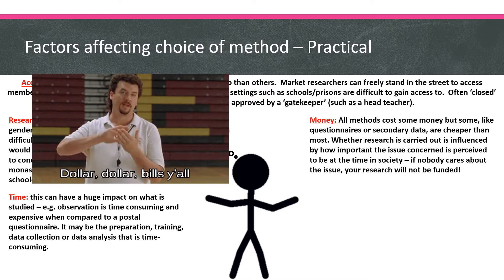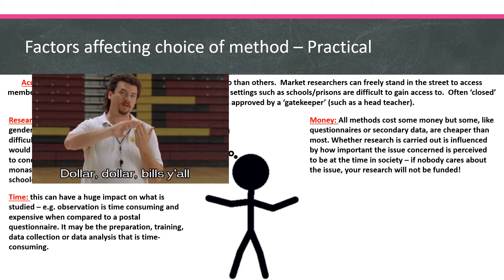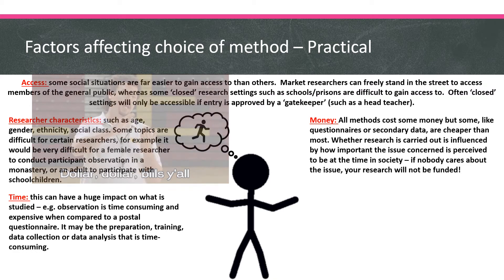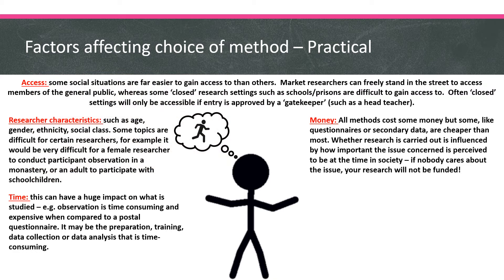Money is also a big factor and does overlap a little with time — time and money tend to go together. The longer a piece of research, the more money it will cost; the quicker a piece of research, the cheaper it can be. Questionnaires are a very cheap method, while participant observation is quite a costly one. There are also bigger factors in terms of funding — who is going to fund the research, who is going to pay for you to do it?